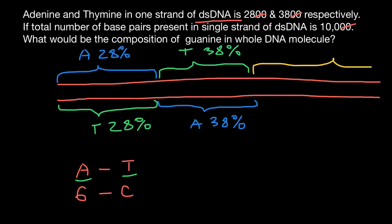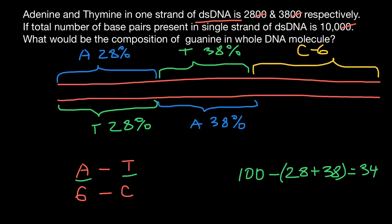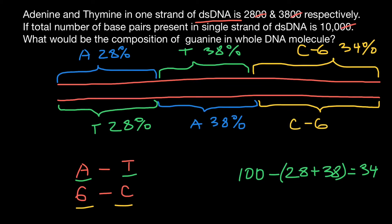That means the rest of this double-stranded DNA is going to be cytosine and guanine. So 100 minus (28 plus 38) would give us 34%. On this strand of the DNA, cytosine and guanine would make 34%. Cytosine pairs with guanine, so on the other strand we also have cytosine and guanine making another 34%.